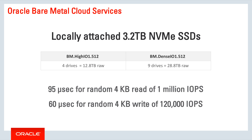The High I/O instance type has four 3.2 terabyte drives for a total of 12.8 terabytes of space. The Dense I/O instance shape includes nine 3.2 terabyte drives for a total of 28.8 terabytes of space.